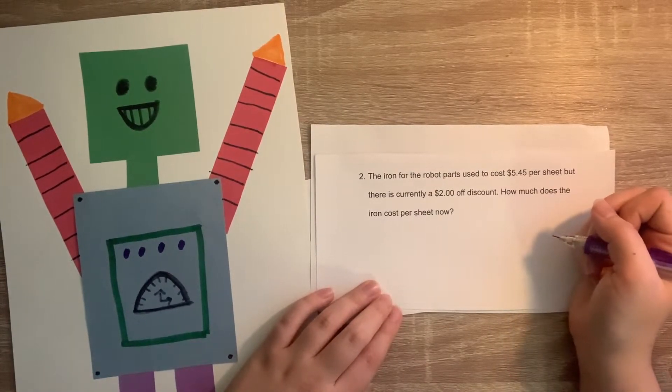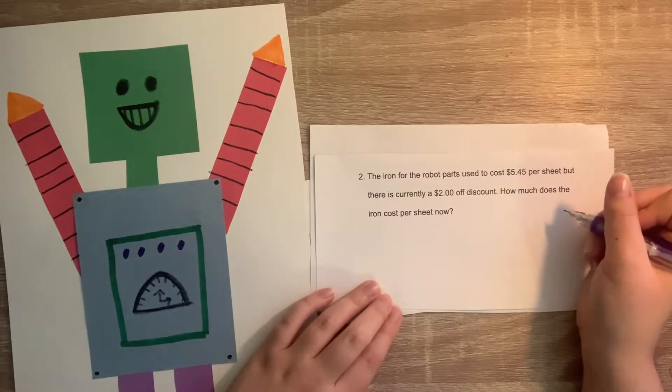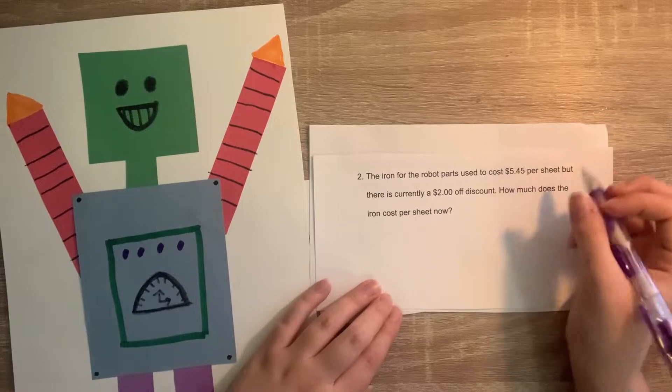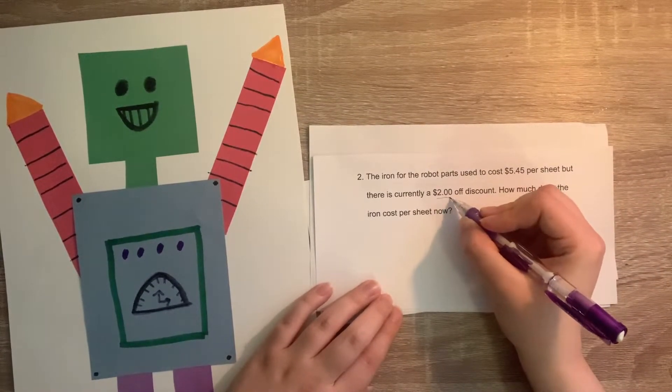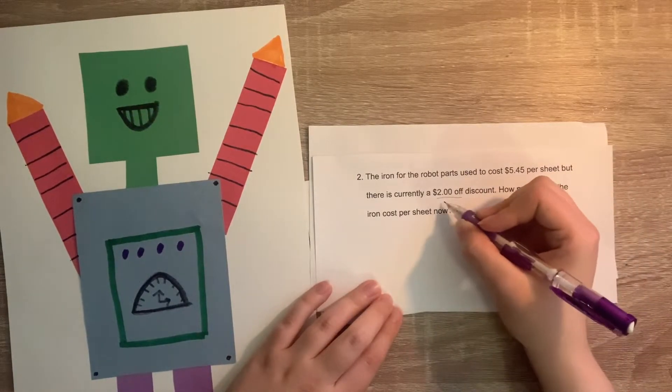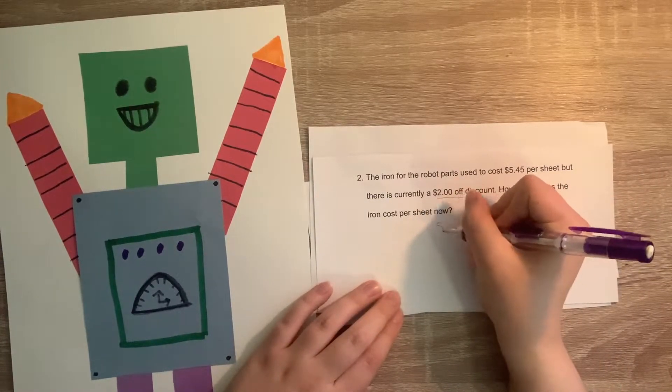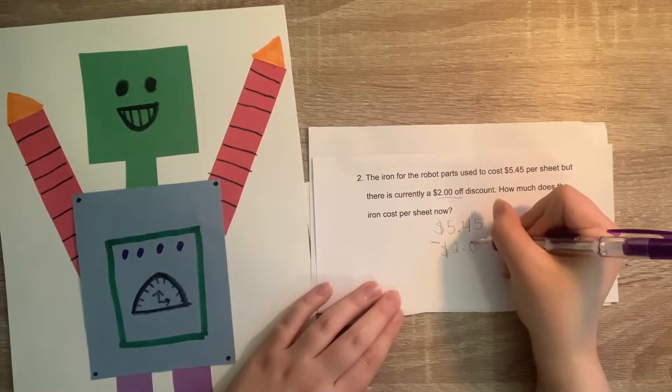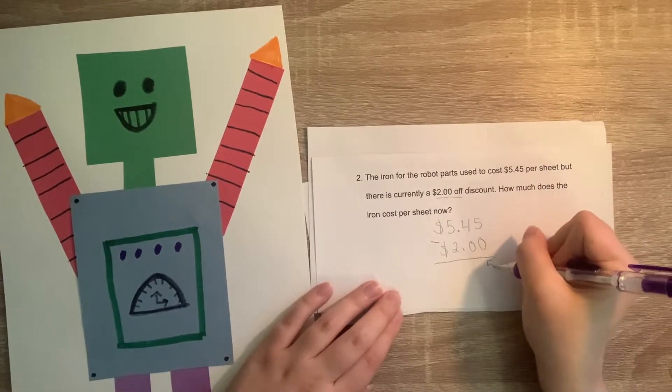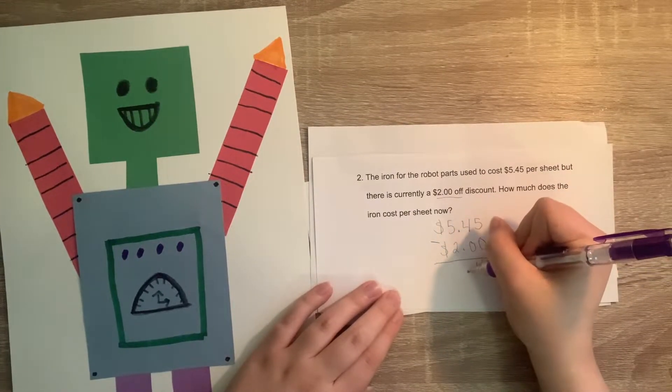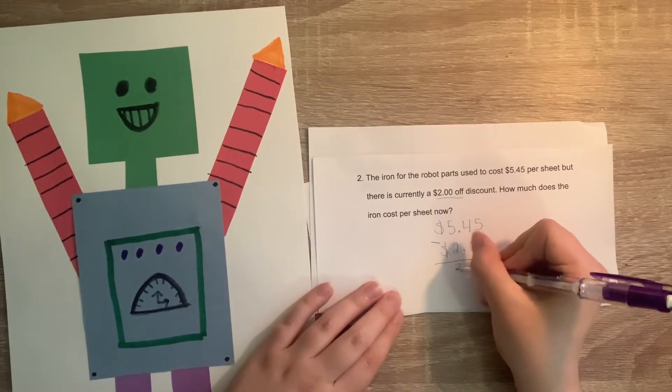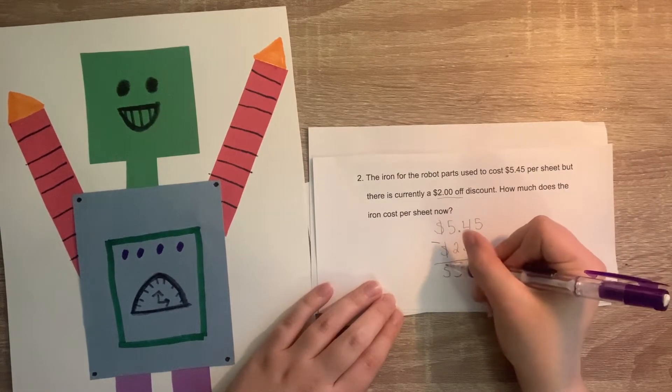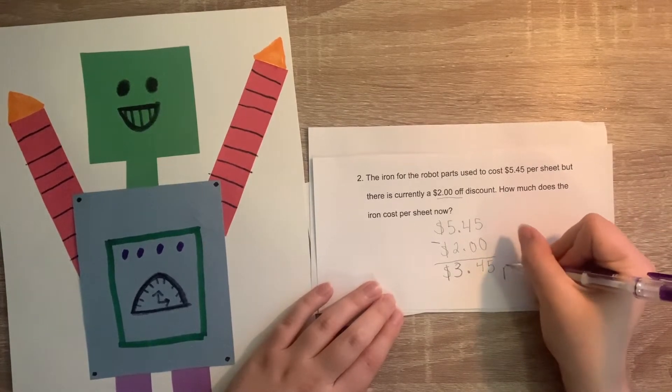The next question says the iron for the robot parts used to cost $5.45 per sheet but there is currently a $2 off discount. How much does the iron cost per sheet now? We know that this is a subtraction problem because it's $2 off. So it's going to be 5.45 minus 2.0. So let's do 5.45 subtract $2 and let's solve. 5 minus 0 is 5. 4 minus 0 is 4. Now we have to bring down our decimal point. And 5 minus 2 is 3. So the answer is 3.45. But what is the units? Yes, this is money. So it's $3.45 per sheet.